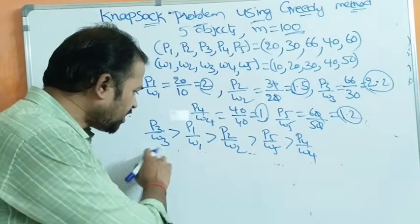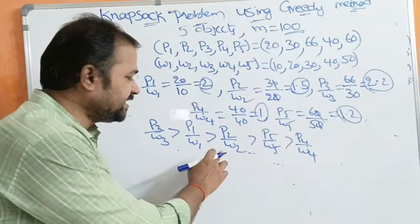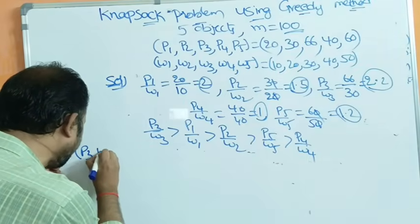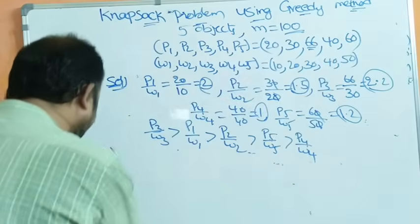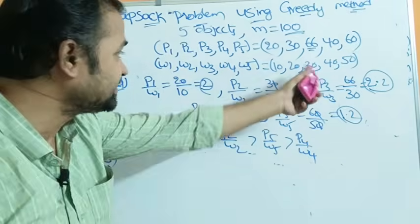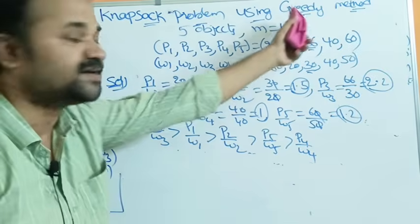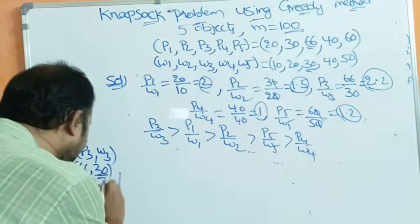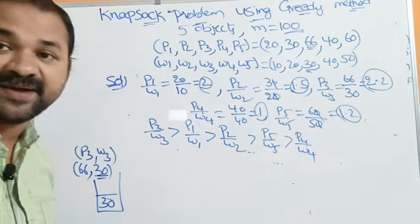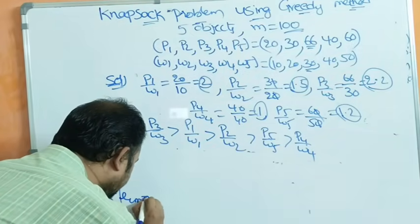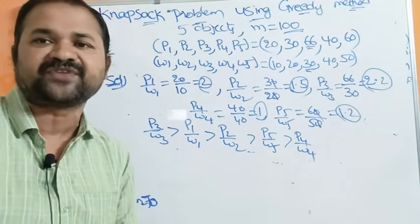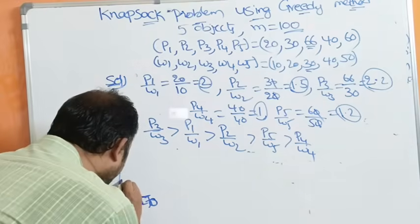Now place objects in the Knapsack in that order. First, take P3/W3 — profit is 66, weight is 30. The Knapsack size is 100 kg. After placing object 3, the remaining size is 100 − 30 = 70 kg. So x3 equals 1.